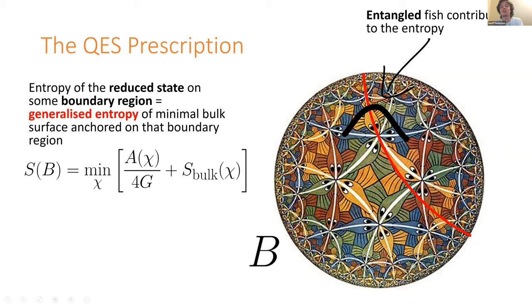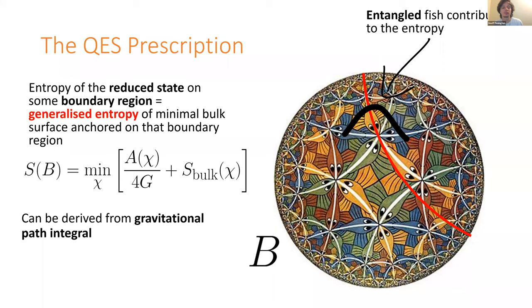The surface that minimizes this generalized entropy is known as the minimal quantum extremal surface. There is a derivation of this formula going back originally to Lewkowycz and Maldacena in 2013 or so, and this derivation really just comes from the gravitational path integral. This is a fairly well-established element of the ADS-CFT dictionary.